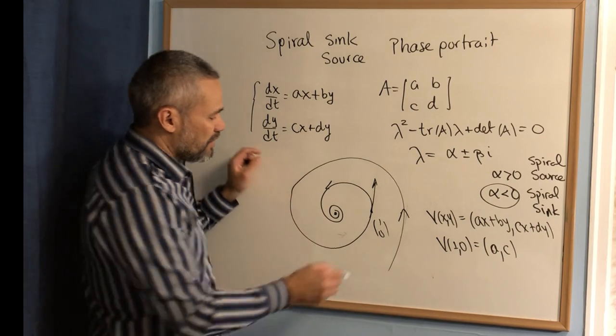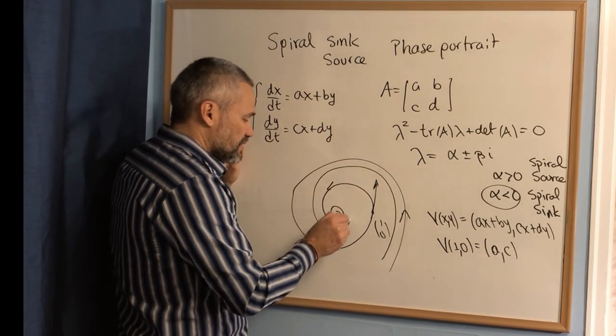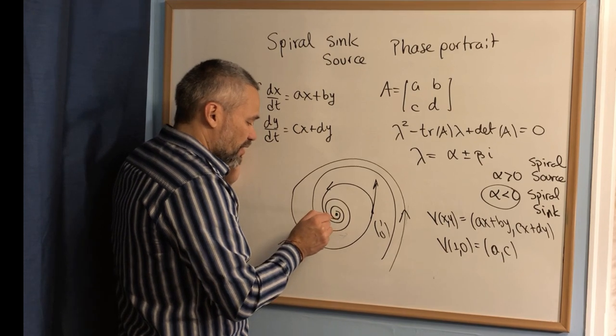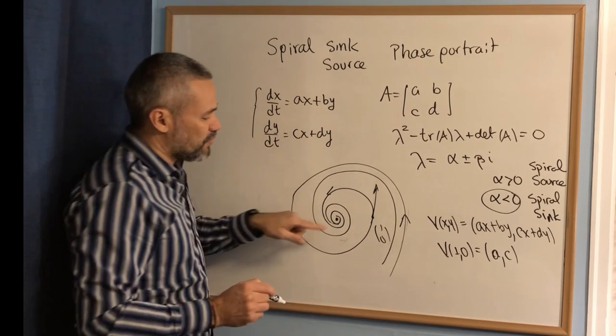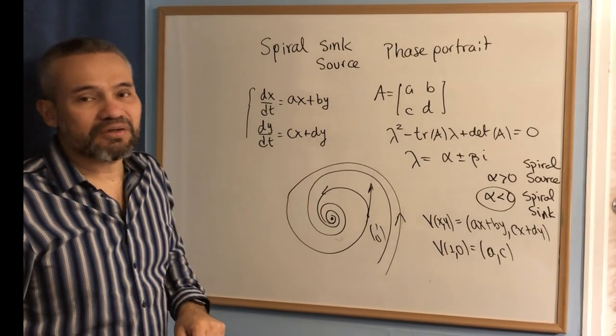We can do another orbit that goes through this point. It will go just in between here, and it will never touch. It will just always go in between infinitely many times, and every orbit looks like this.